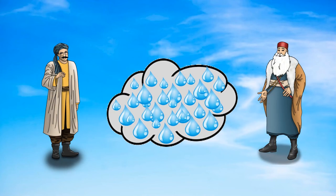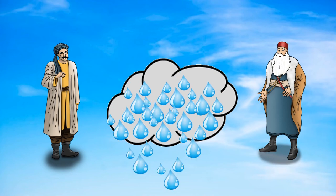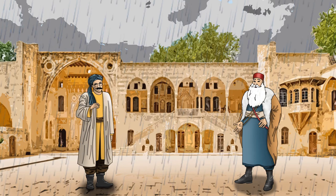Once the cloud is formed, the water droplets become bigger and heavier. The cloud also gets bigger and cannot carry the water droplets anymore, so they fall back to the ground. That's rain — is this where rain comes from? Yes!